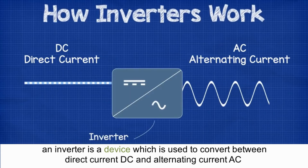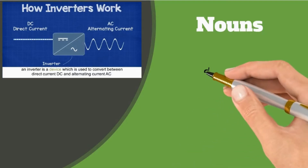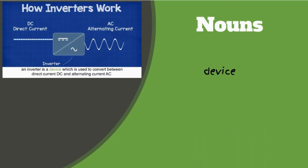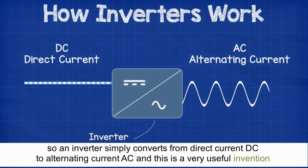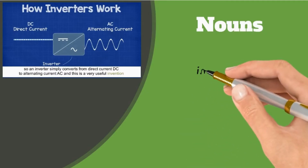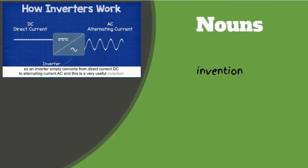An inverter is a device which is used to convert between direct current DC and alternating current AC. Device: a machine made for a special purpose. So an inverter simply converts from DC to AC, and this is a very useful invention. Invention: a new machine or device that has never been before.